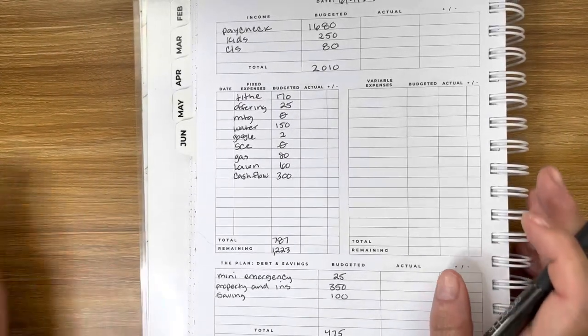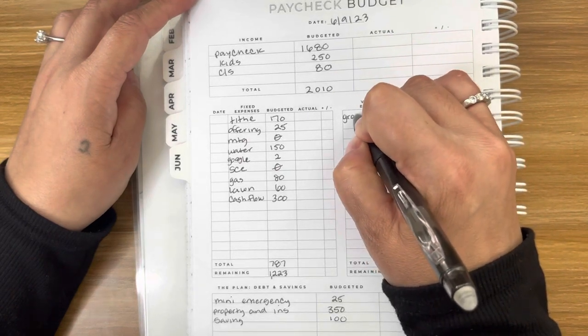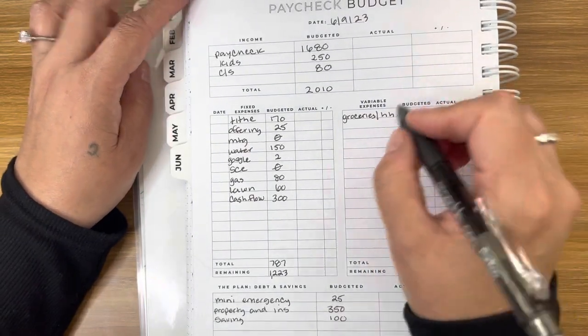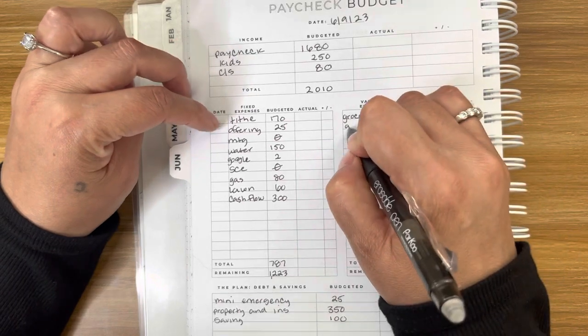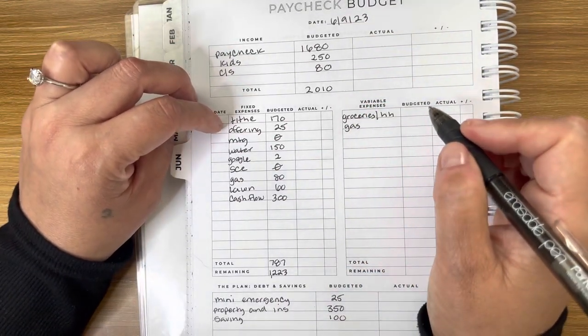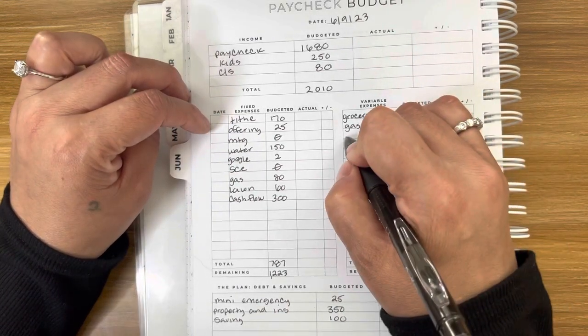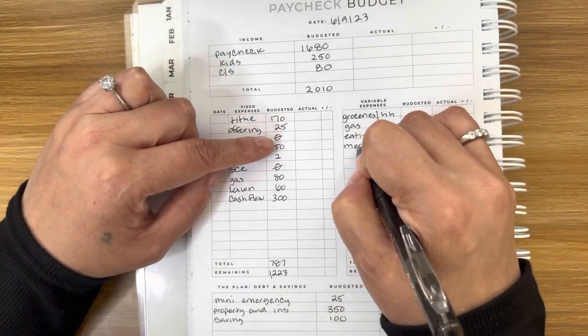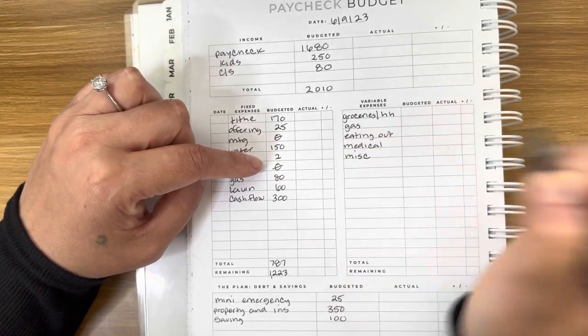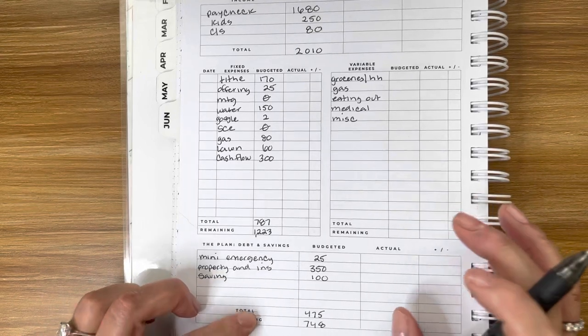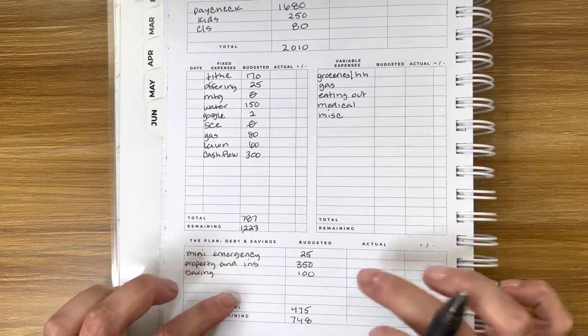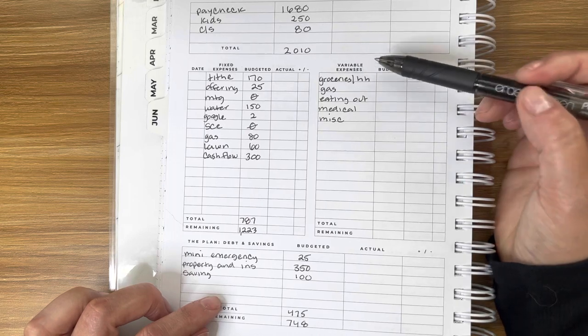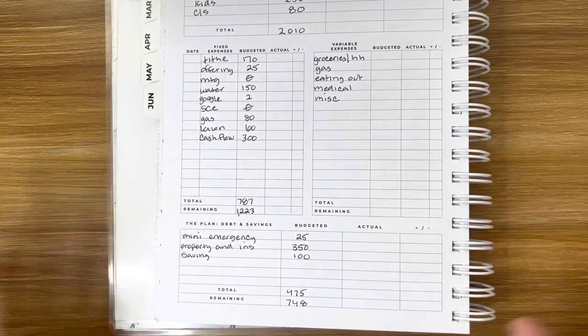So we have $748 for two weeks. Next, we keep track of groceries and household, and also it includes the food for our pets. And then we have gas, eating out, medical and miscellaneous. We have $748 left over for two weeks. We don't budget a specific amount for our variable expenses. We just try not to go over what is left over for two weeks.